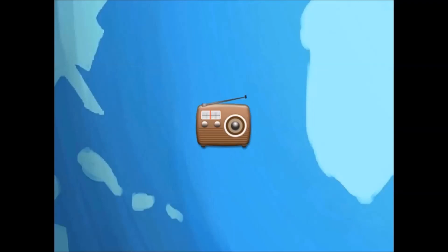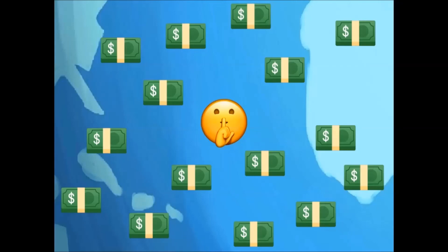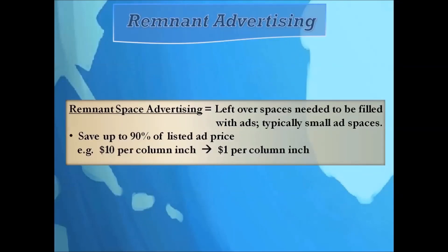That covers everything we needed to know about print advertising. In part two of this series we'll be covering radio advertising. Now for an insider secret that very few people know about and that you won't find on a rate card: remnant space advertising. Newspaper publishers are always looking for advertisers to fill as much space as possible, otherwise the wasted space is lost revenue. With remnant space advertising you can save up to 90% of the listed price — for example, if the rate is $10 per column inch and there's a 90% discount, you only pay $1 per column inch.